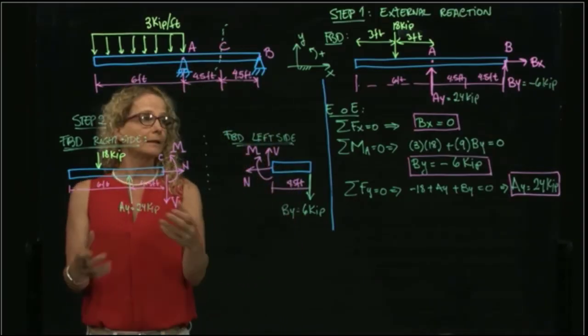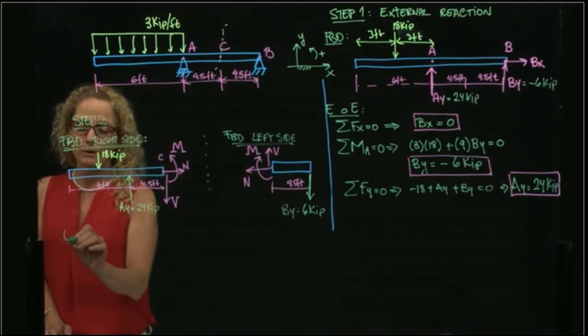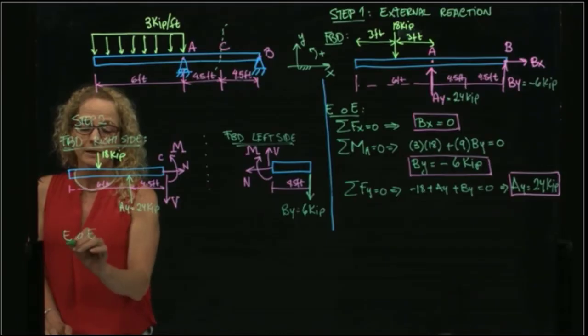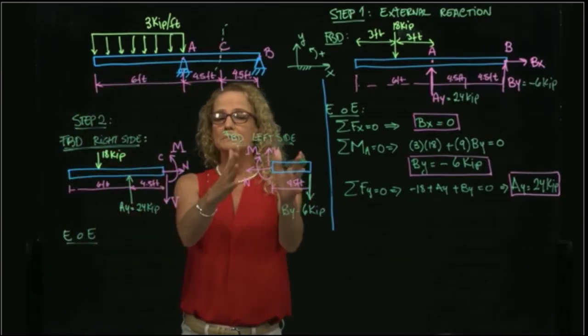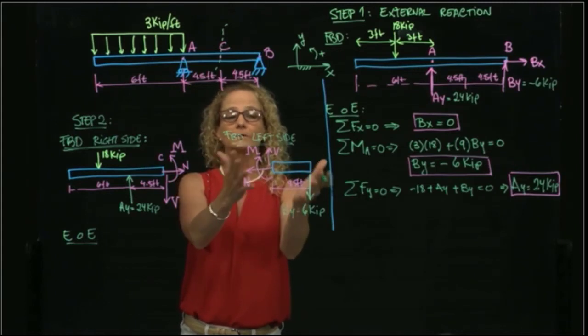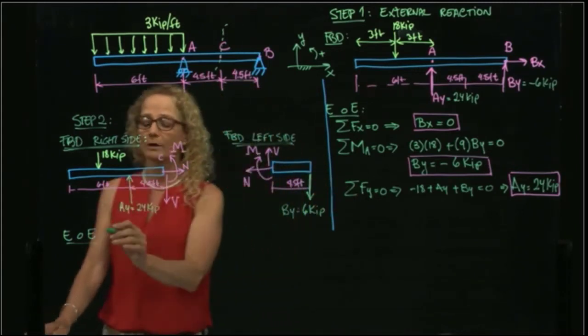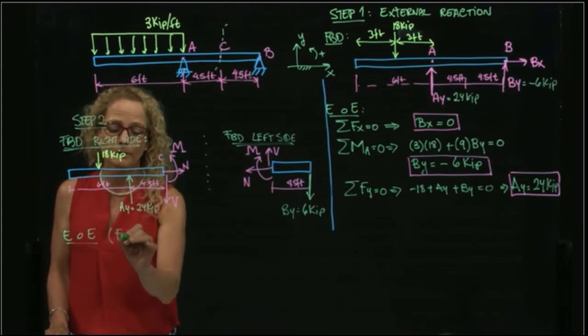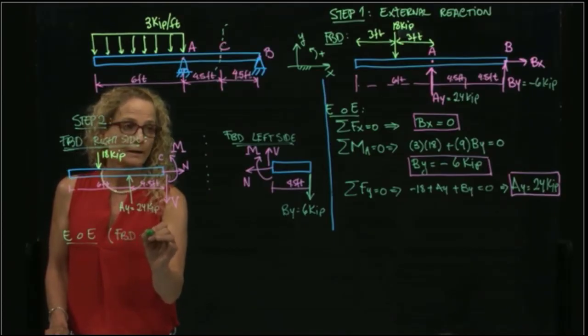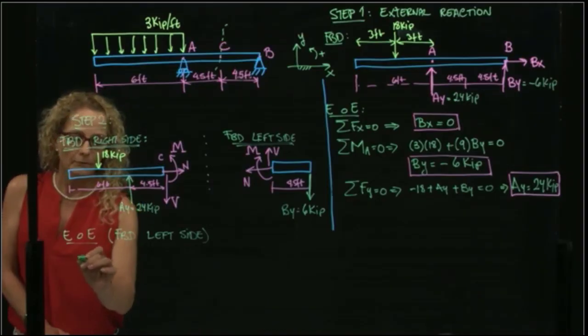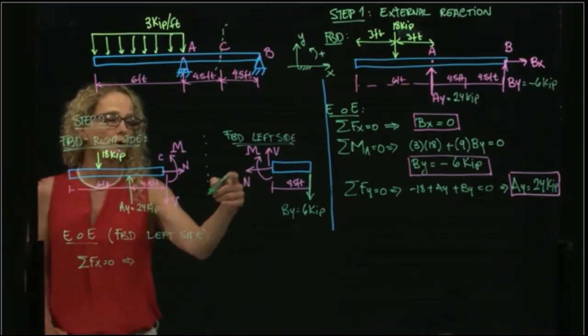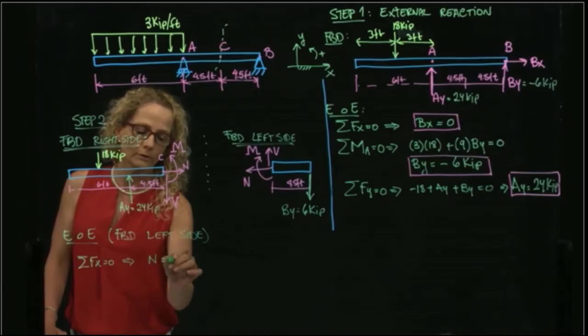So now that I did that, I'm going to apply my equations of equilibrium. So I will choose either. Seems like this is a little bit easy because I have less forces. So I'm going to use equations of equilibrium for the free body diagram of the left side. And then I have my forces in X equals to zero leads me to that the normal force is equals to zero.